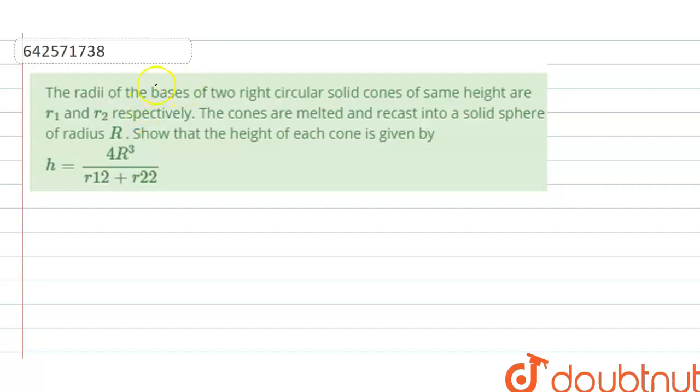So this is the question. We are given the radii of the bases of two right circular solid cones of same height. The radii of the bases of two cones of same height are R1 and R2 respectively.